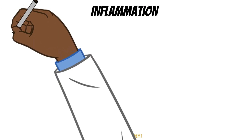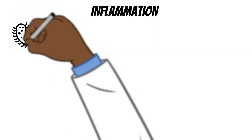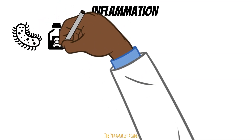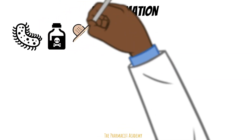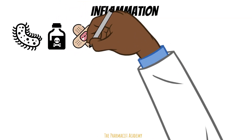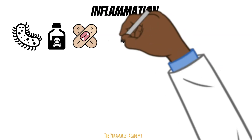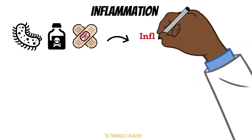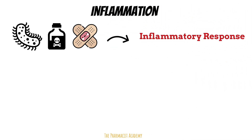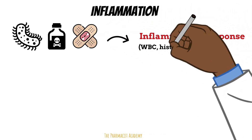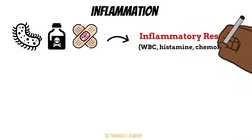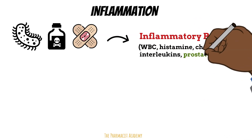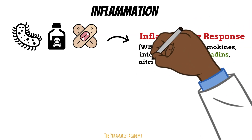Inflammation occurs when your body gets exposed to foreign agents such as bacteria, toxins, or from an injury. When this happens, the body tries to fix the problem by recruiting your immune cells to the site, leading to the release of substances that can cause vasodilation, clotting, increased permeability, etc.